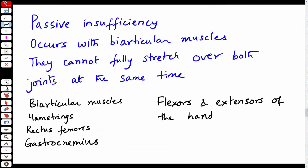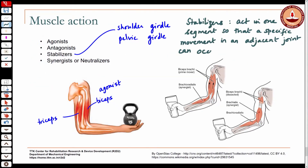Stabilizers allow specific movement in an adjacent joint to occur. It is like keeping one thing fixed so that you can move the other the way you want. These are muscles that undergo minimal movement.